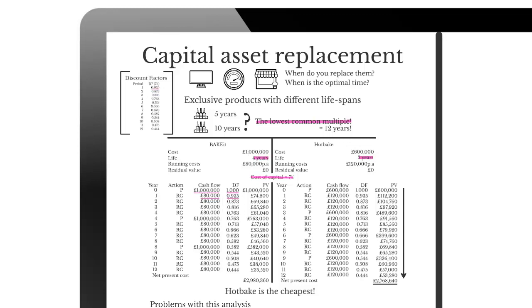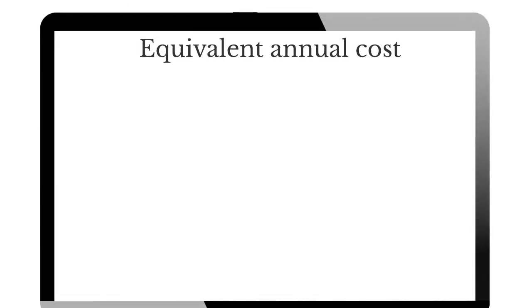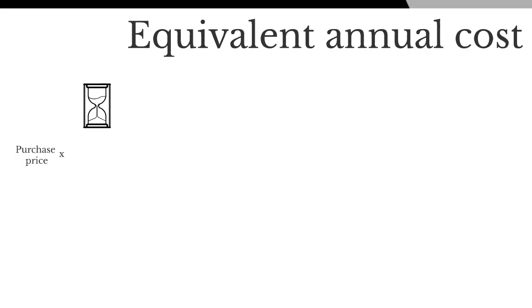There is a quicker way of doing it, and that is what I'm going to discuss in this video. The quicker way is an important formula for the CIMA syllabus, particularly for the P2 syllabus, and that is the equivalent annual cost. This formula is the purchase price of that asset multiplied by R divided by 1 minus (1+R) to the power of minus N.